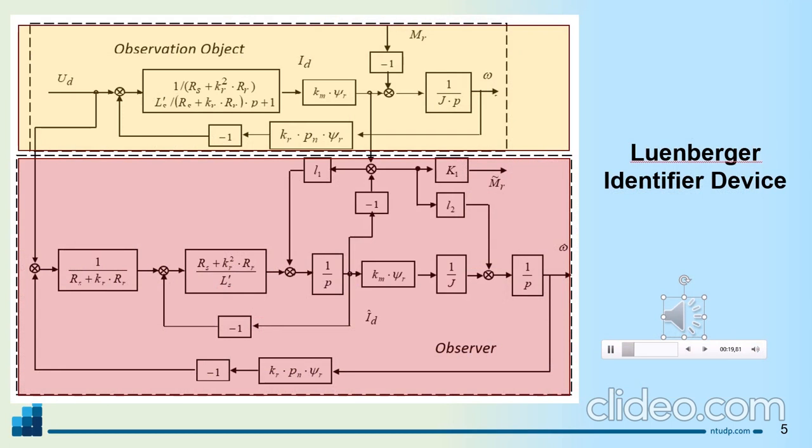It is made in the form of a mathematical model operating in parallel with the object of observation, which is described by the state vector of the object by a second-order system into which a matrix of correction factors is introduced, to ensure sufficient speed of the identification process. The elements of the correction matrix were chosen so that the zeros of the characteristic polynomial of the observer lay to the left of the roots of the characteristic polynomial of the observed object. In both cases, the coefficients of the correction matrix are proportional links.